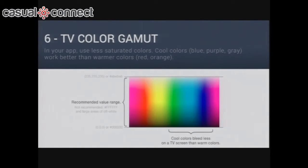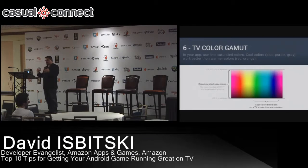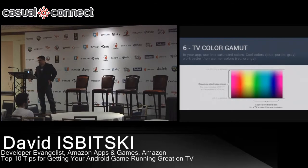Another thing to think about is color. If your app or game has a lot of warm colors — reds and oranges — I have three different TVs in my house and they all reproduce that color differently. Phone and tablet screens are really accurate at reproducing colors; TV, not so much. You may want to think about using cool colors — blues, purples, and grays — as there's less saturation variation when moving across those.